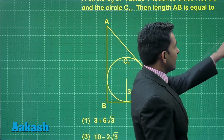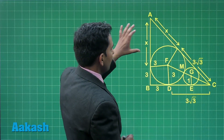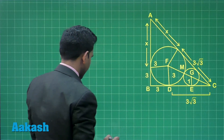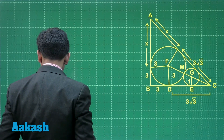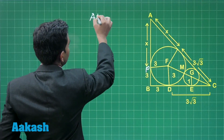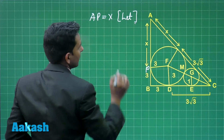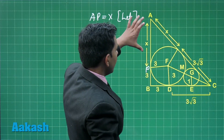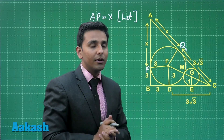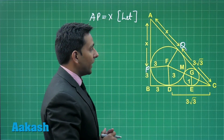We can solve this question using the figure. We assume the length of line segment AP to be x. So AP is equal to AQ because the tangents drawn from an external point are equal in length. Therefore, the length of AP is equal to AQ, and it is equal to x units.